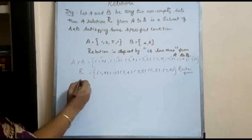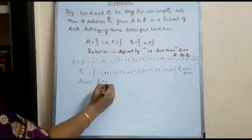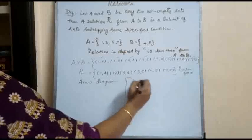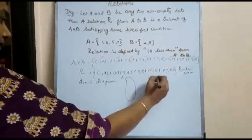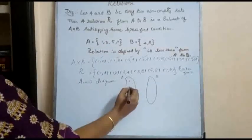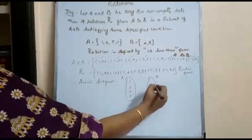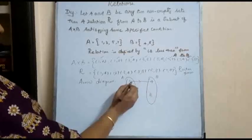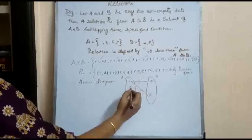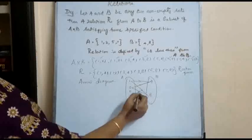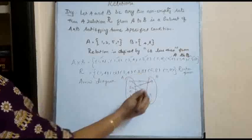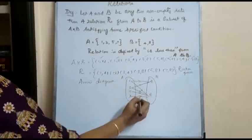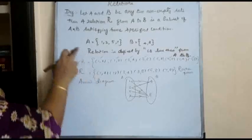The relation can also be represented with an arrow diagram. The arrow diagram is the visual representation of a relation. Let this be set A and let this be set B. Elements in set A are 1, 3, 5, and 7; elements in set B are 4 and 8. So: 1 is related to 4 and 1 is related to 8; 3 is related to 4 and 3 is related to 8; 5 is not related to 4, so 5 is related only to 8; and 7 is also not related to 4, but 7 is related to 8.